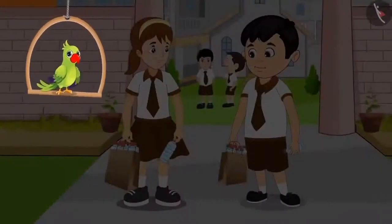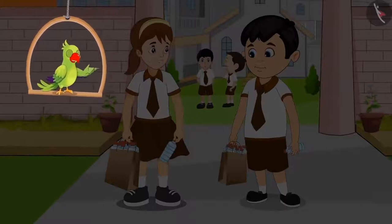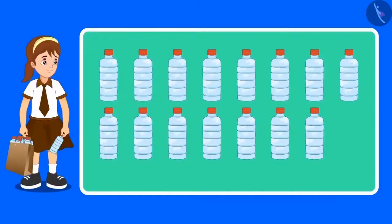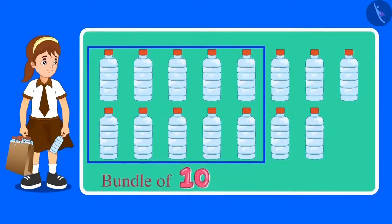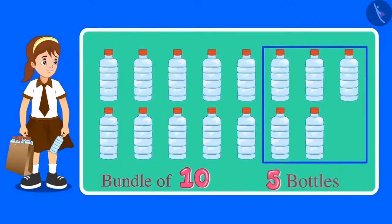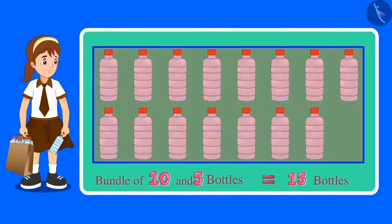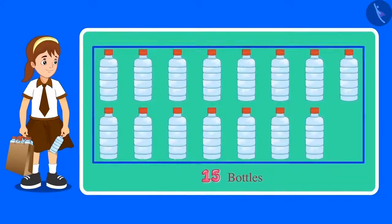A cleanliness drive is being carried out at their school today. Chotu and Aarti have been assigned the job of collecting plastic bottles from their school and surrounding areas. Let us count Aarti's bottles first. These are 10 bottles — one bundle of 10 — and there are 5 more bottles. So a bundle of 10 and 5 are 15 bottles. Aarti has collected a total of 15 bottles.